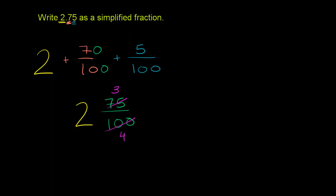So as a simplified mixed number, this becomes 2 and 3 fourths. After you do a lot of practice here and you just see a lot of numbers like this, it'll be almost second nature for you to say, 2.75 is the same thing as 2 and 75 hundredths is the same thing as 2 and 3 fourths.